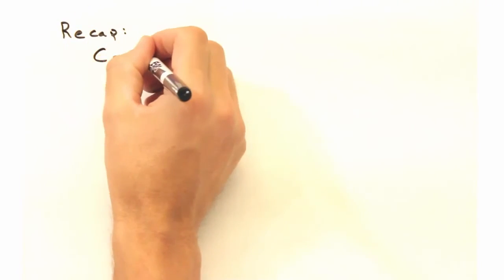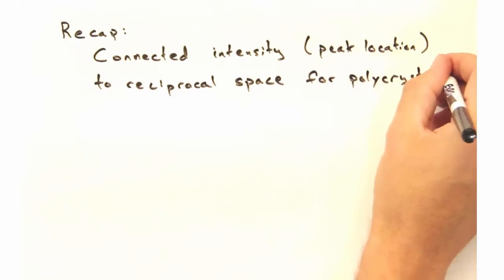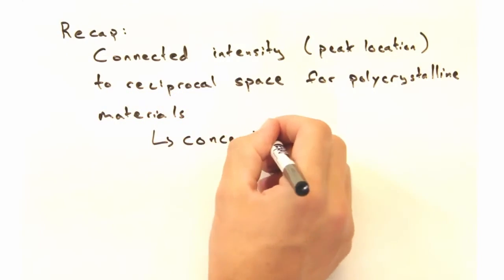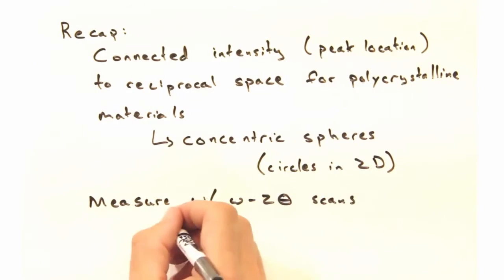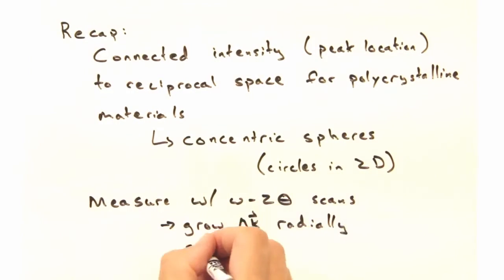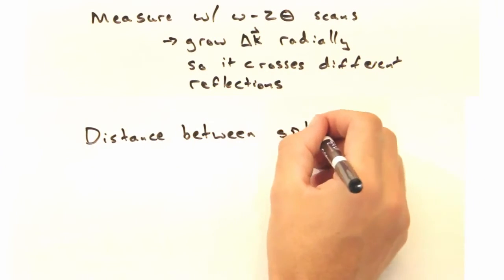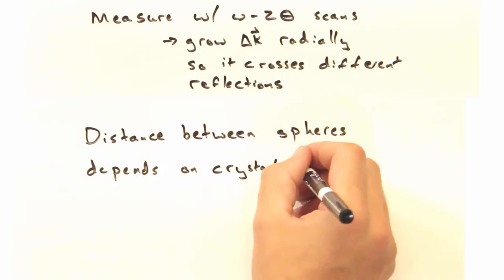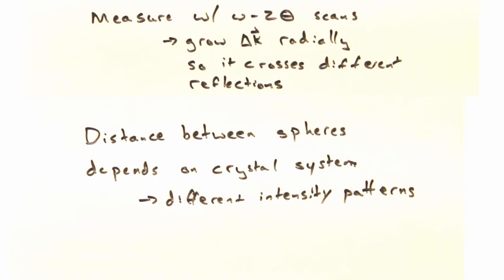So as a recap, we're ultimately able to connect intensity with reciprocal space for polycrystalline material through this concentric sphere model of reciprocal space. And we're able to utilize this with omega-2-theta scans, which grow delta k radially so that it crosses different reflections. We also saw that the distance between the concentric spheres changes depending on the crystal system, and thus gives rise to different intensity patterns.